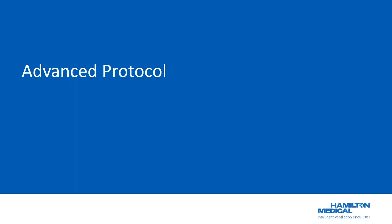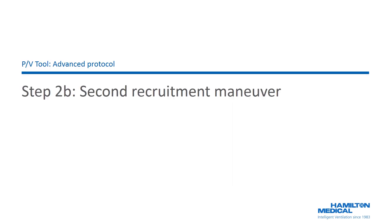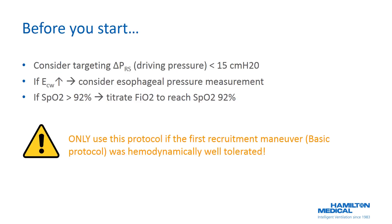Let's introduce the advanced protocol. Only use this protocol if the first recruitment maneuver was hemodynamically well tolerated. The advanced protocol begins with performing a second recruitment maneuver. Before you start, try to limit the patient's respiratory system driving pressure to a maximum of 15 centimeters of water after the recruitment maneuver. If the patient shows indications of increased chest wall elastance — for example morbid obesity or intra-abdominal hypertension — consider esophageal manometry to guide your recruitment strategy.